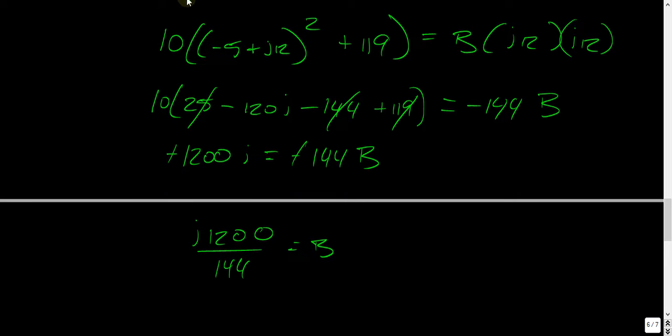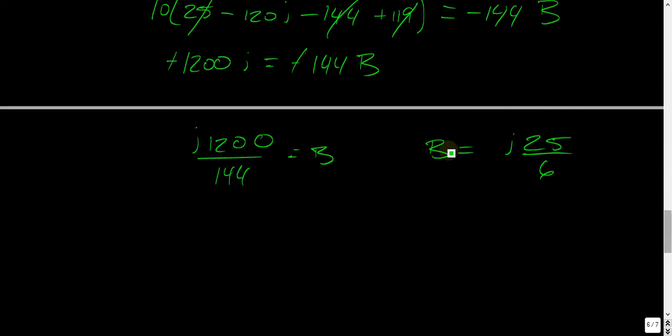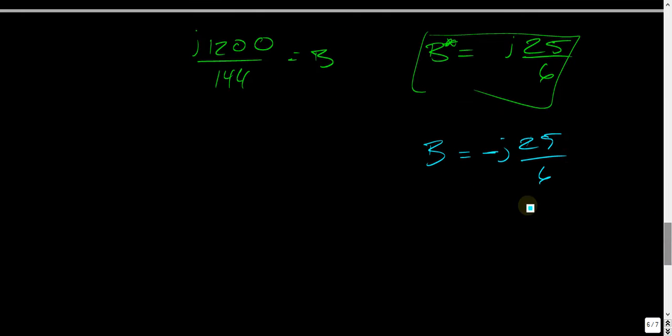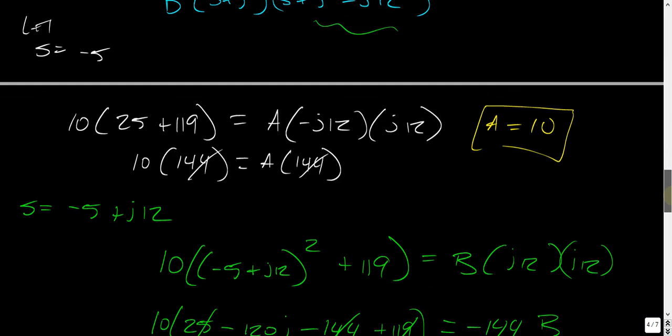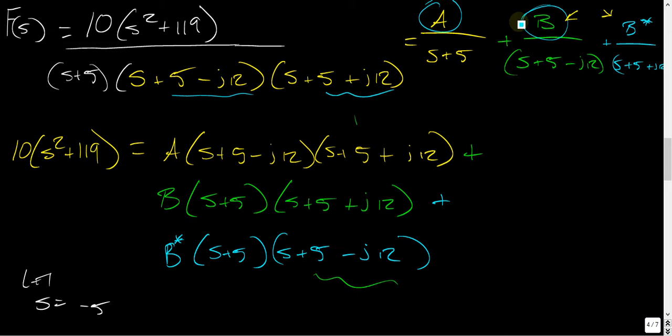What you end up with is then B equals J25 over 6. So what that means is that's B conjugate, so what that means is B equals minus J25 over 6, because it's the conjugate, these two are conjugates of each other. So now we have our variables, our constant terms, for our partial fraction expansion, and then we can just take the inverse Laplace of those terms.